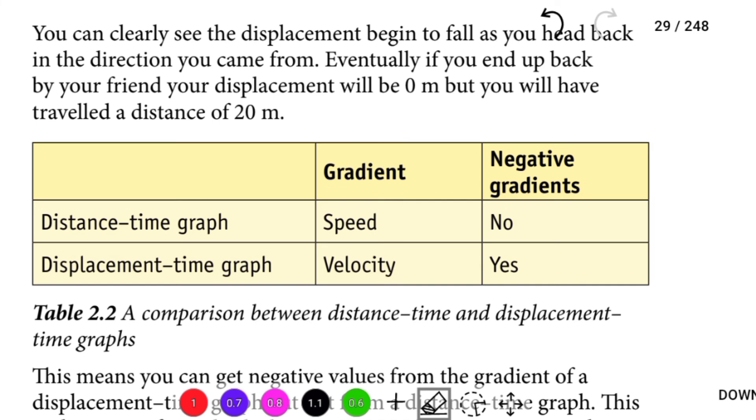Gradients - negative gradients. Distance-time graph gradient gives speed. Displacement-time graph gradient gives velocity. Speed from distance-time graph cannot be negative. Displacement-time graph can have negative gradients.